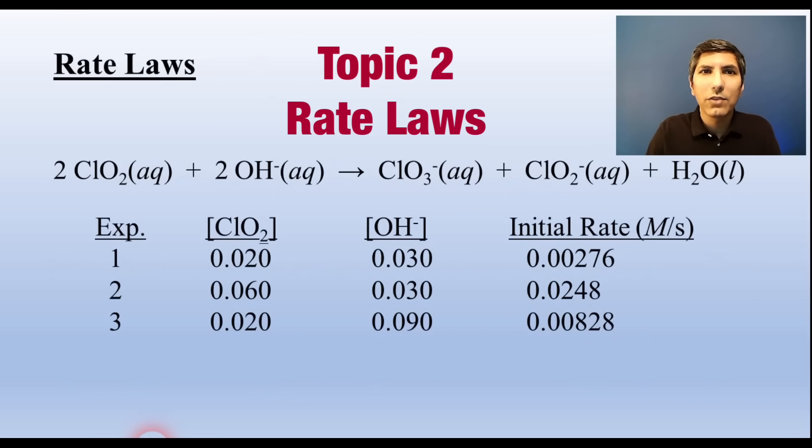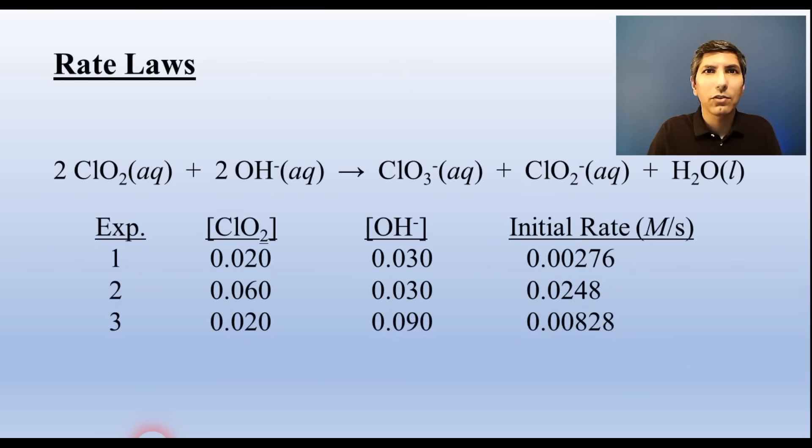A rate law is an equation that relates the concentrations of the reactants to the initial rate of reaction. For this reaction, we'd write the rate law in the format rate equals K, which is the rate constant, times the concentration of ClO2 raised to a power, we'll call it X for right now, times the concentration of hydroxide raised to a power, which we'll call Y for right now. This is the basic format for every rate law.